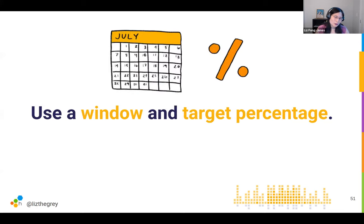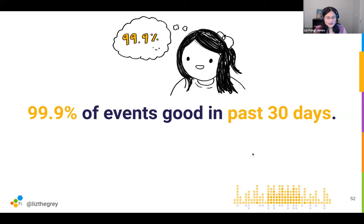You don't want to set it over one day or five minutes — you want to set it over a longer time period like 30 or 90 days, because your customers have memories. They'll remember your site was down yesterday — you don't get perfect forgiveness for that until 30 or 90 days down the road. For instance, I might want to set a goal to have 99.9% of events be good over the past 30 days — meaning 99.9% of user journeys were served with HTTP 200 in less than 100 milliseconds.